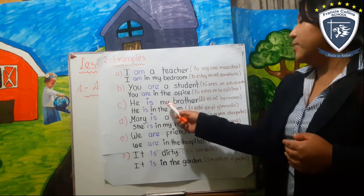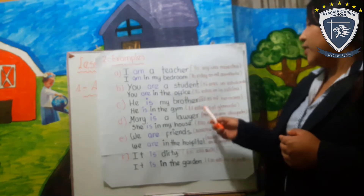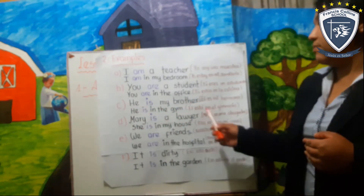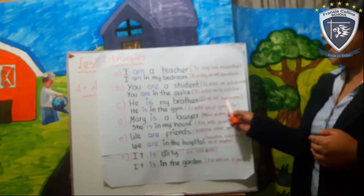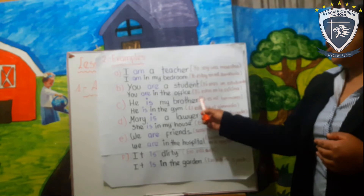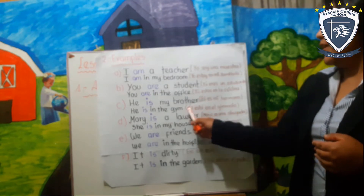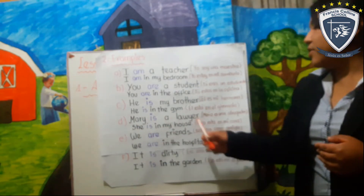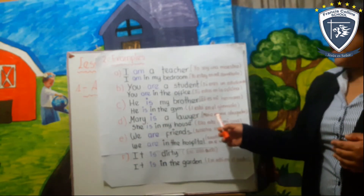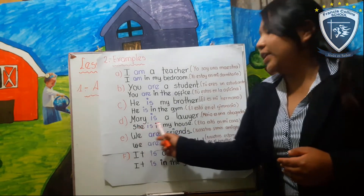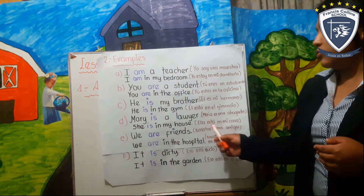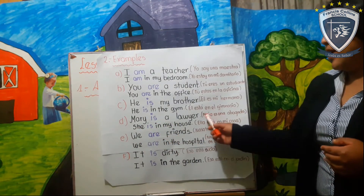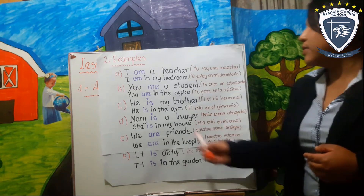He is my brother — él es mi hermano. He is in the gym — él está en el gimnasio. Él es, él está. Mary is a lawyer — María es una abogada. She is in my house — ella está en mi casa. María es, ella está.